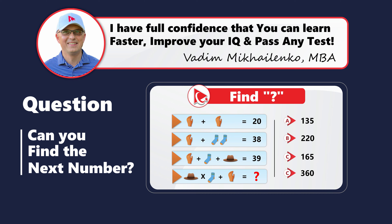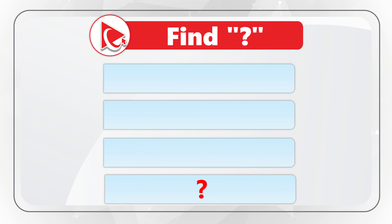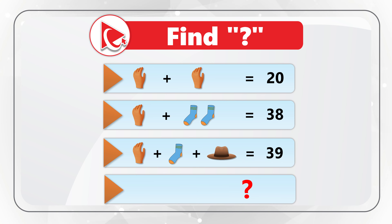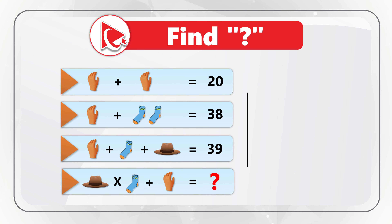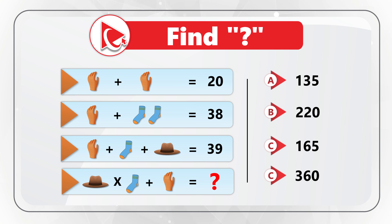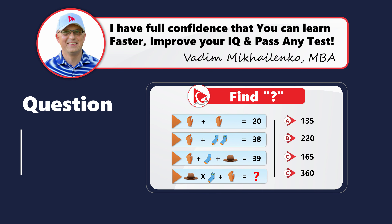Here's one of my favorite questions where you test your mental skills as well as attention to detail. You're presented with a series of equations and need to calculate the missing number. First: glove plus glove equals 20. Second: glove plus two socks equals 38. Third: glove plus sock plus hat equals 39. The final equation: one hat multiplied by one sock plus one glove equals the missing number. Choices: A: 135, B: 220, C: 165, D: 360. If you have a better way to solve it using your mental powers, please share in comments.